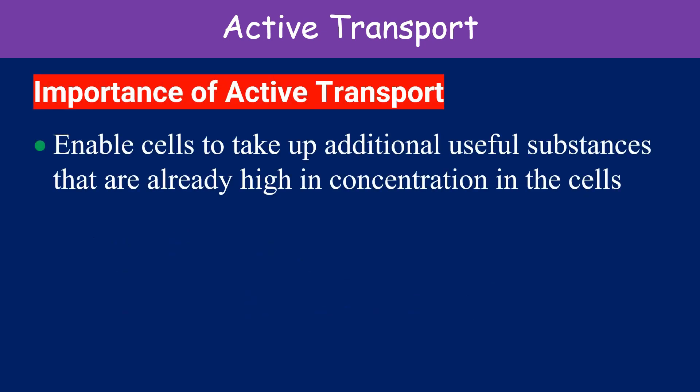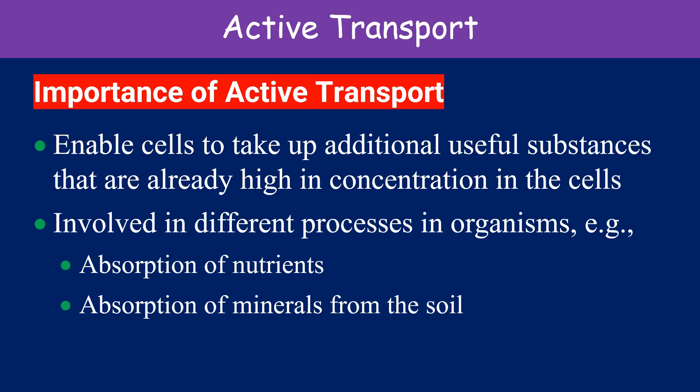Active transport enables cells to take up additional useful substances that are already present at high concentration in the cells. Active transport is involved in different processes and organisms, such as the absorption of nutrients and absorption of minerals from the soil.